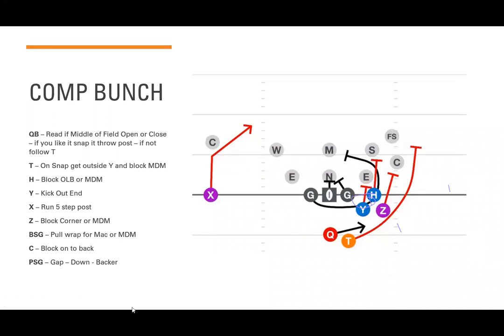You can also run it out of a compressed bunch set — this was our favorite formation this past year and gave us a lot of value because you're already setting up blockers to the point of attack. The slight change is the Y kicks out the end instead of the H. The H takes the middle linebacker, the Z plays most dangerous man — sometimes a corner, sometimes the free safety, sometimes a linebacker — and the T comes up to clean out, then the quarterback follows.